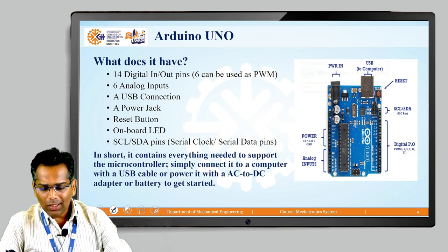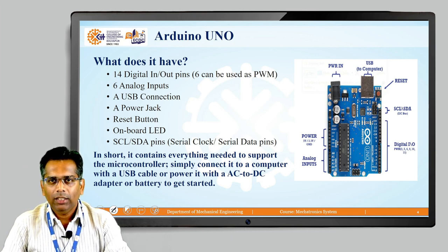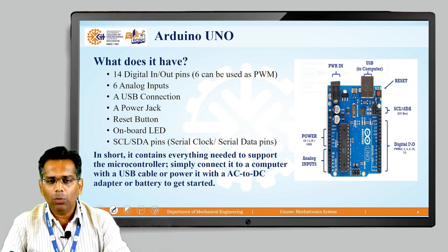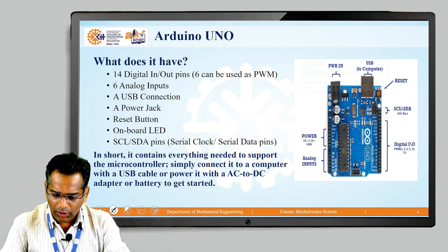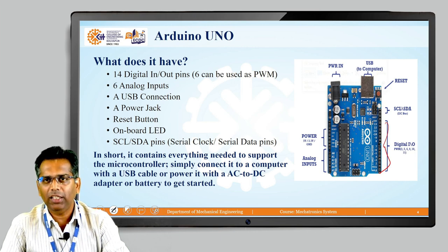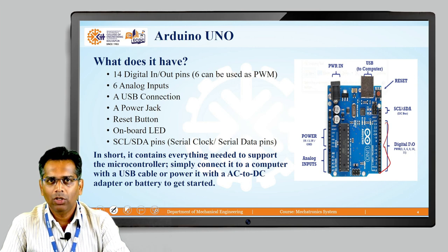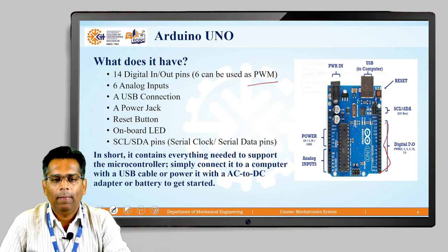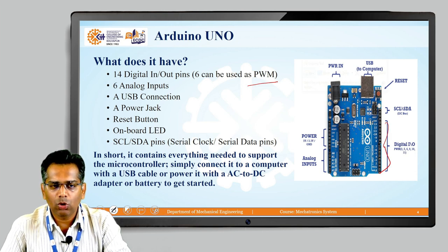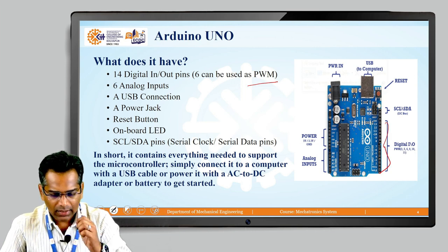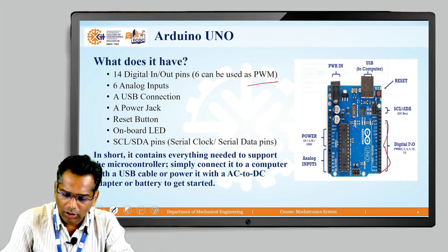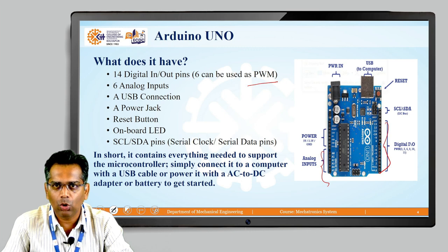Moving forward, this Arduino has 14 digital input-output pins. If you look at the right side, this portion is the digital input-output pins — each pin can work as input as well as output. Out of those 14 pins, 6 pins are used as PWM (pulse width modulation), which is used for controlling variables or speed. The Arduino also has 6 analog inputs, starting from A0 to A5.